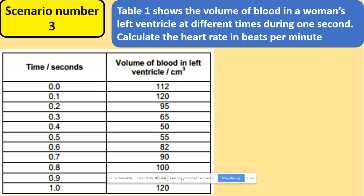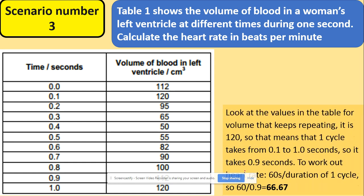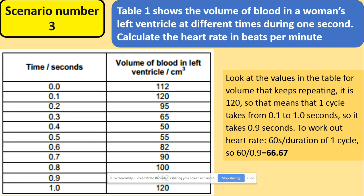Similar situation but with the table. The same approach applies. You need to look at the values that keep repeating themselves. For example, 120 in here and 120 on that side. We've got 120 here as well. That means that one cycle lasts from 0.1 to 1 second, it's 0.9 seconds. You're including all of this to find the time.